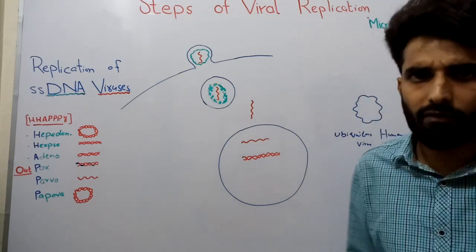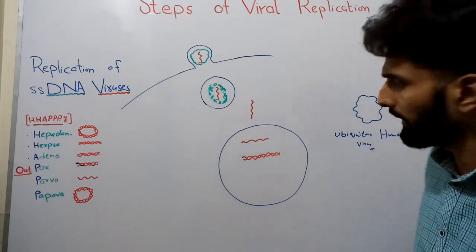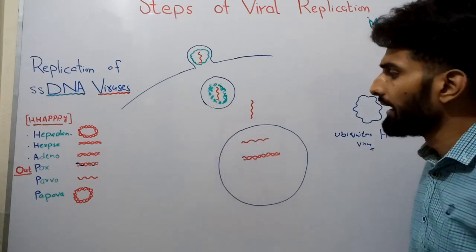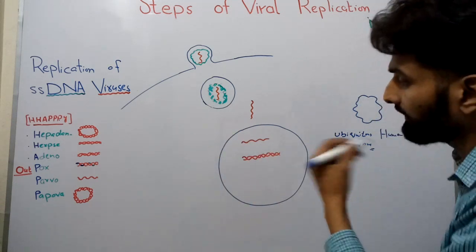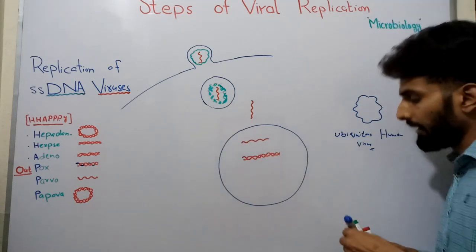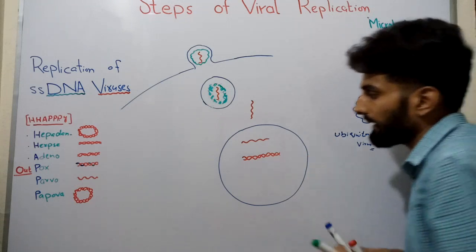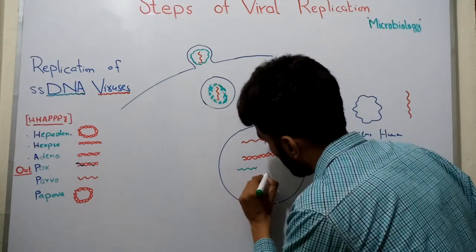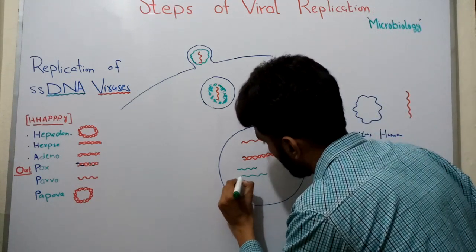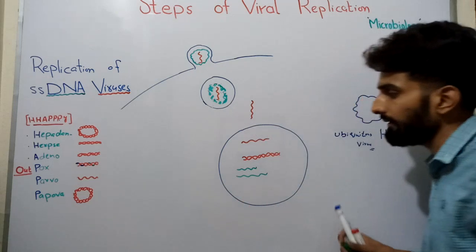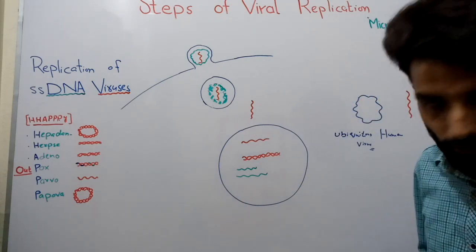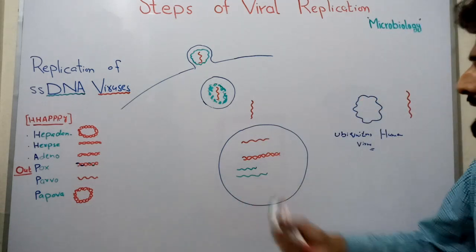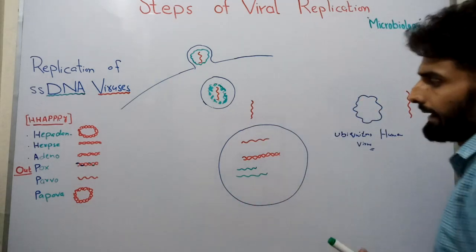This double-stranded DNA uses host enzyme RNA polymerase for transcription. RNA polymerase causes transcription, and as a result, different messenger RNAs are formed.